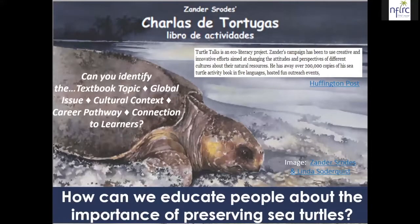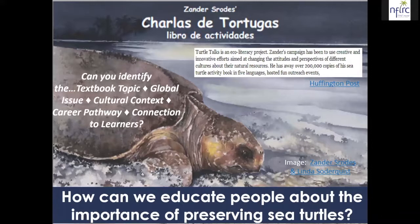This project came from a young elementary student who was deeply concerned about sea turtles and the destruction of their environment. He put together his own campaign — an activity book that has since been translated into five different languages and become part of an ongoing eco-literacy project distributed around the world through a community organization. This gives ideas for whether you could put together an activity book to address a particular social issue, and what community partners you might work with to distribute it and raise awareness.